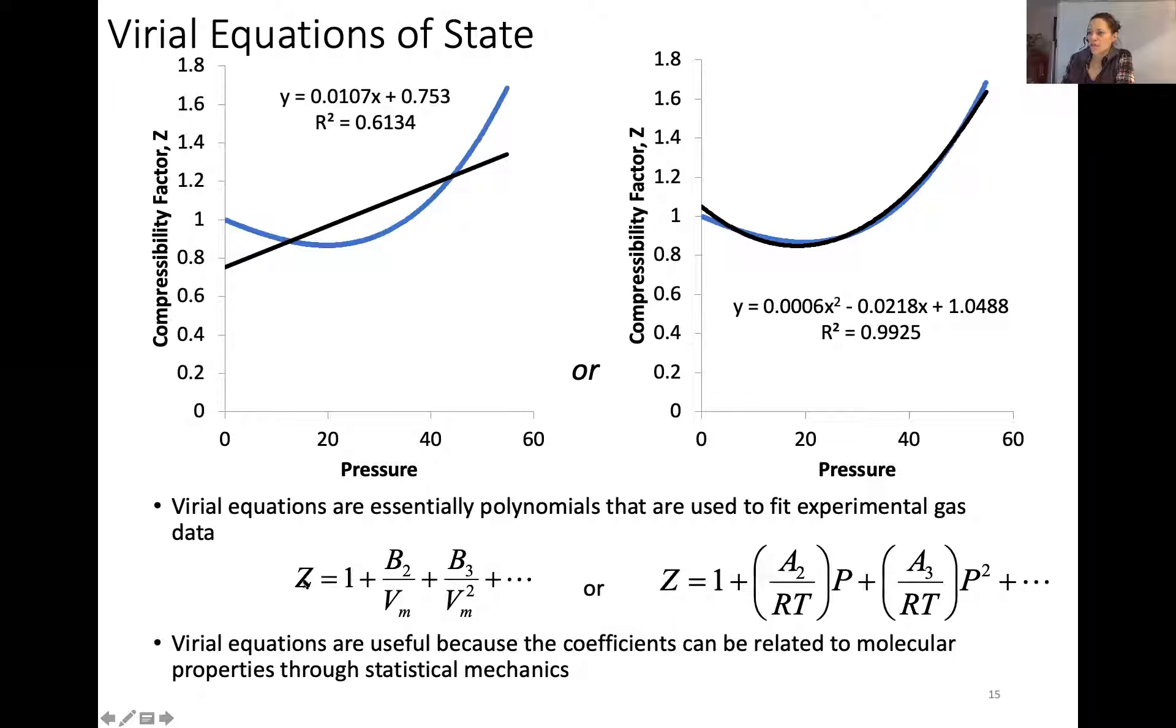Virial equations are polynomials that you can use to fit the data. This model shows you that the compression factor is related to pressure in terms of a building polynomial, so you get y equals x squared minus a coefficient x plus some value. And R squared of 0.9925, the closer R squared is to one, it fits better.